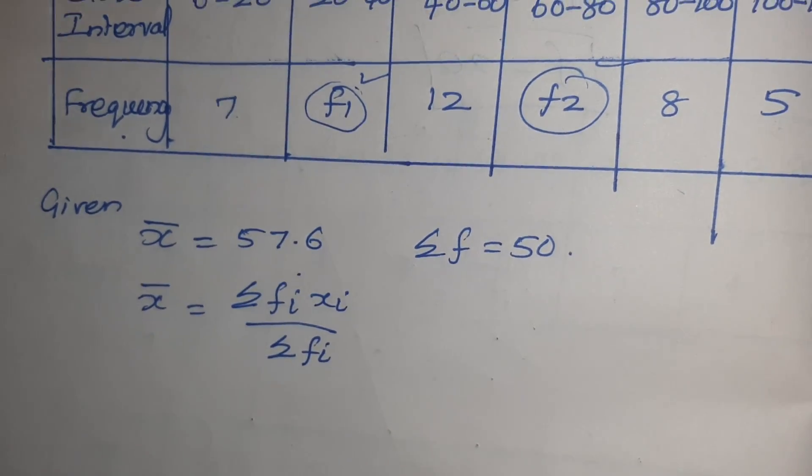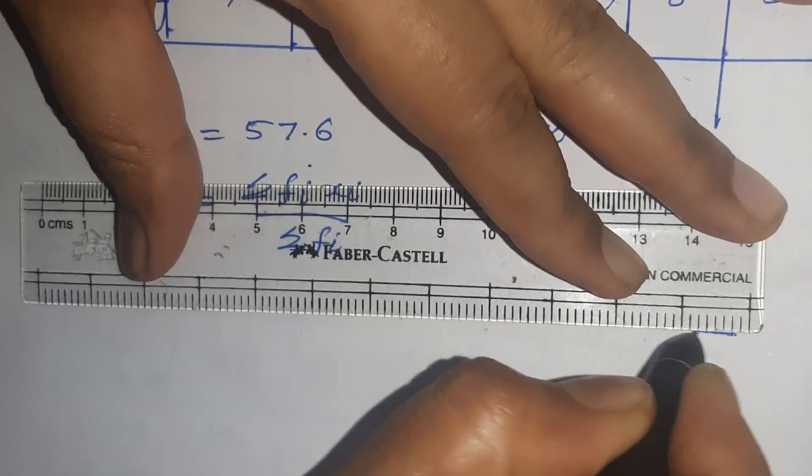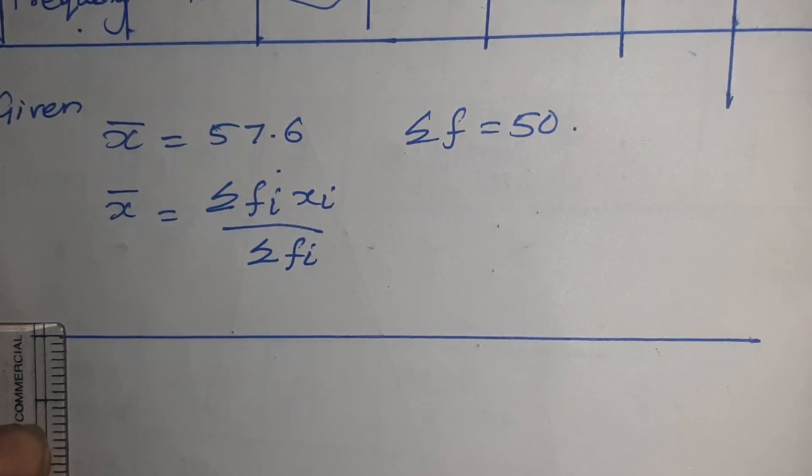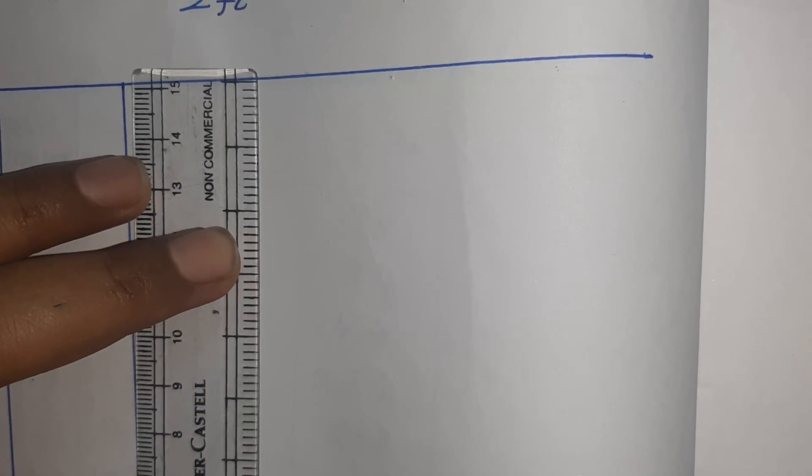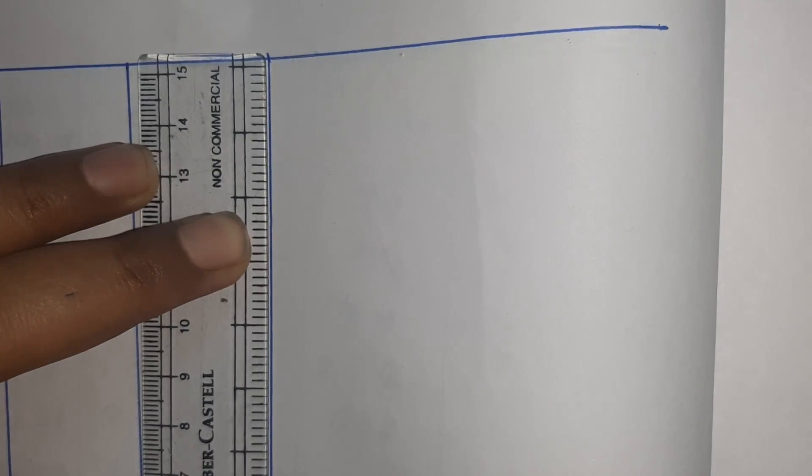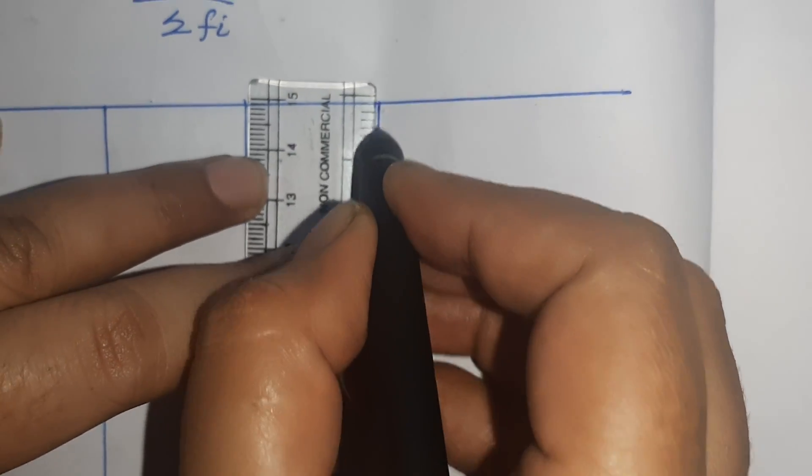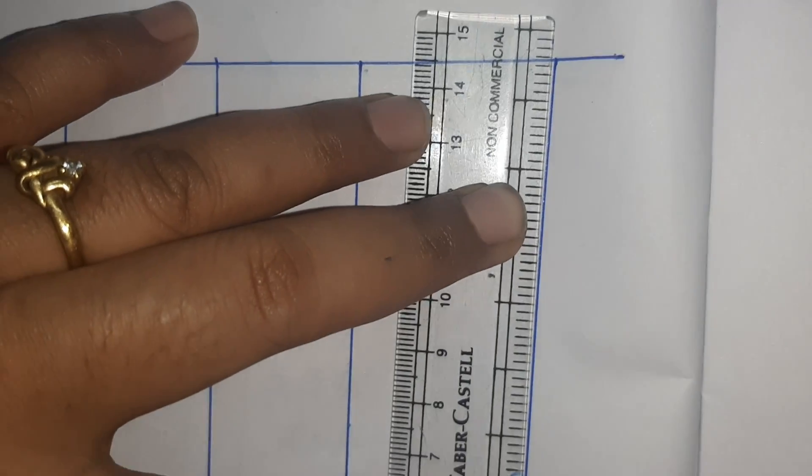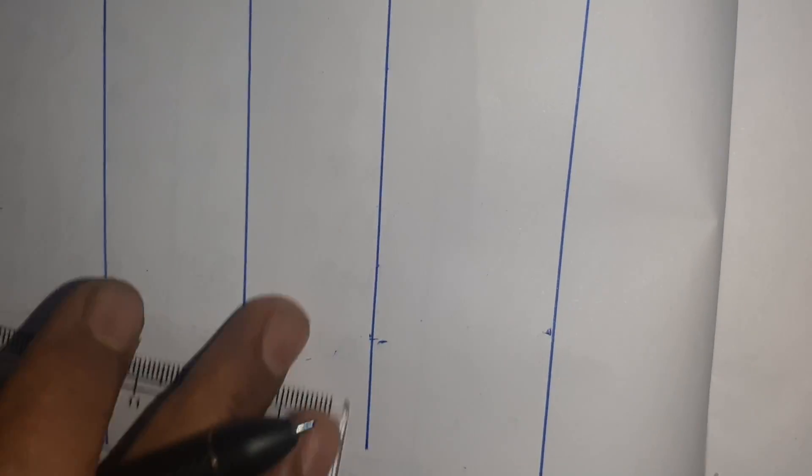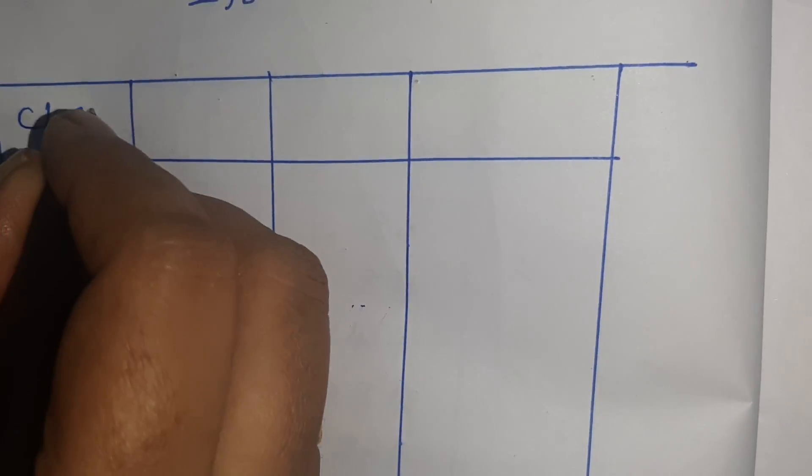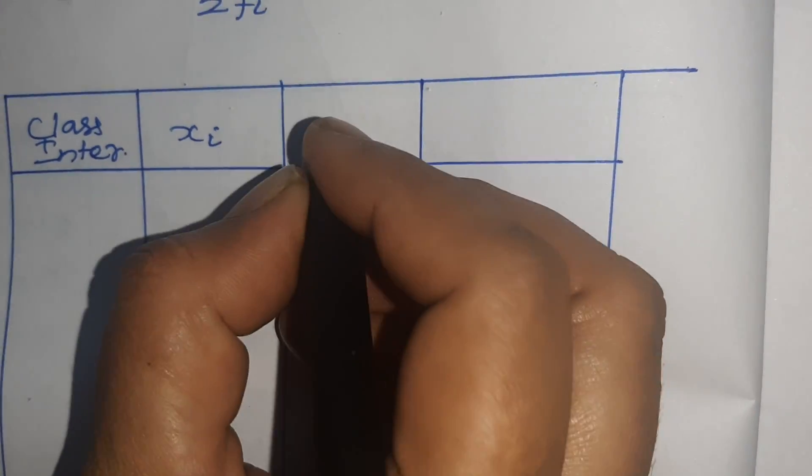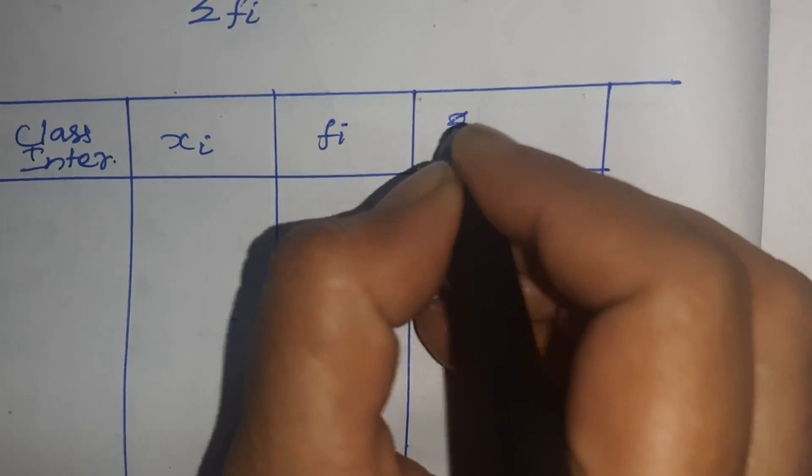What is the formula to find mean? X bar equals sigma Fi Xi divided by sigma Fi. Here we have to find sigma Fi Xi and sigma Fi also. Now we have to draw the table. Class interval, then Xi, then Fi, then sigma Fi Xi.